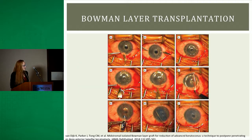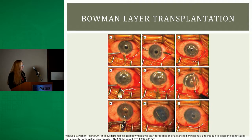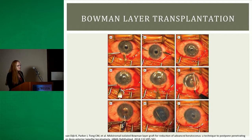Here are just some images showing you the various steps of a Bowman layer transplant surgery. You first create a scleral tunnel incision and a paracentesis, fill the anterior chamber with air, and then create a mid-stromal pocket dissection throughout the cornea.